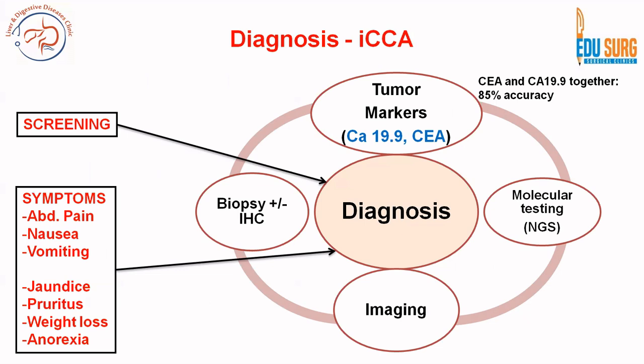Coming to diagnosis: if patients are undergoing screening based on risk factors, the first step after screening is usually ultrasound. Tumor markers — CA 19-9, CEA, and alpha-fetoprotein — are commonly done in liver cases. If CEA and CA 19-9 are done together, it has 85% accuracy in providing a diagnosis.